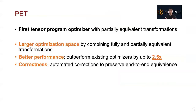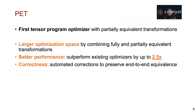To take advantage of partially equivalent transformations, we built PAT, the first tensor program optimizer with partially equivalent transformations. PAT enables a much larger optimization space for tensor programs by combining fully and partially equivalent transformations. By exploring this much larger optimization space, PAT achieves better performance by outperforming existing optimizers by up to 2.5 times. In addition, PAT guarantees correctness by automatically generating correction kernels to preserve end-to-end equivalence.